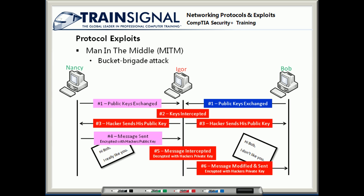Once that message gets to Bob and he decrypts it, he'll see that the message says, "Hi Bob, I don't like you." And now Nancy and Bob are not going to get along because of what Igor just did.